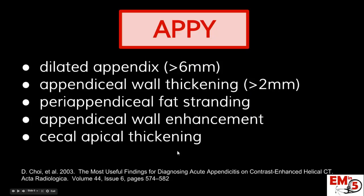In appendicitis, now that we've found the appendix, we should be looking for these findings. First, a dilated appendix — anything bigger than 6 millimeters. You should also see appendiceal wall thickening, greater than 2 millimeters. You'll probably see some fat stranding around that area. The wall of the appendix should be enhanced, and maybe even the cecum will be a little bit enhanced or thickened.